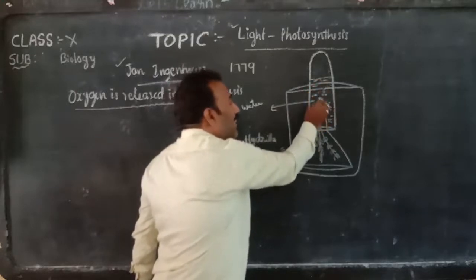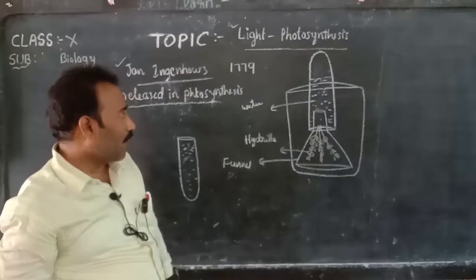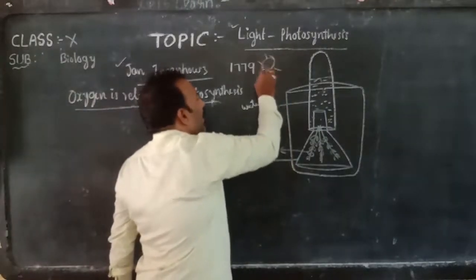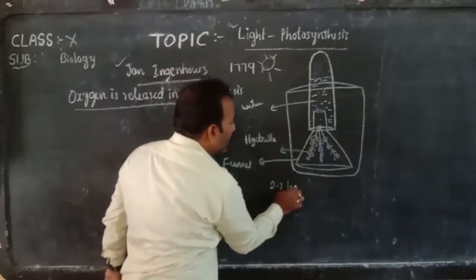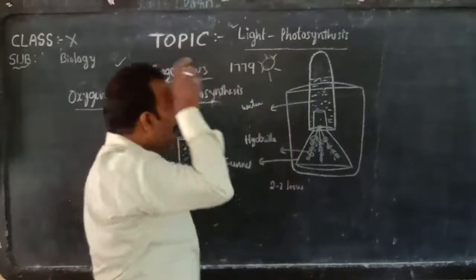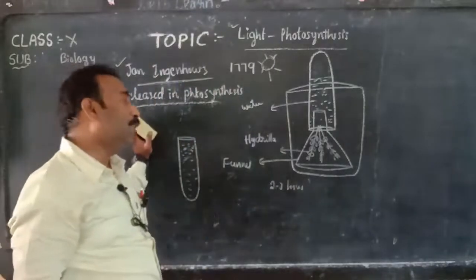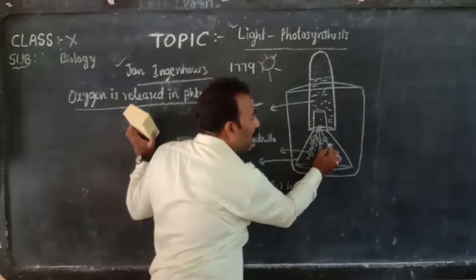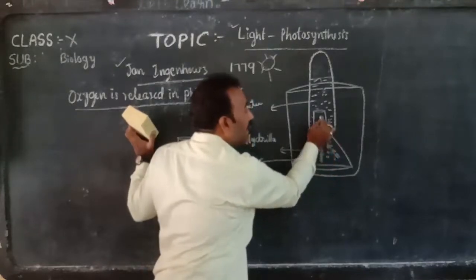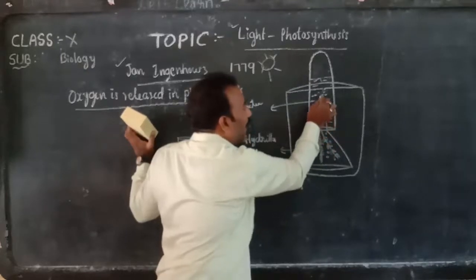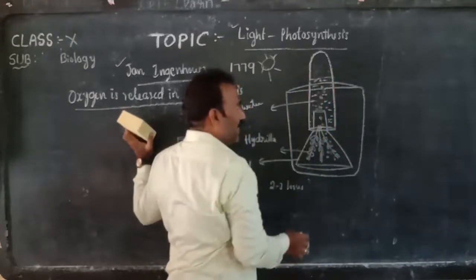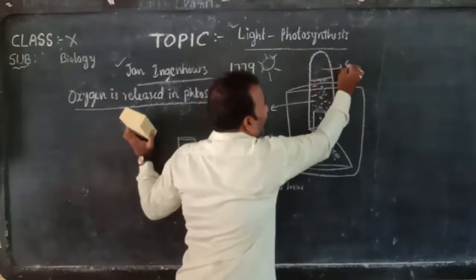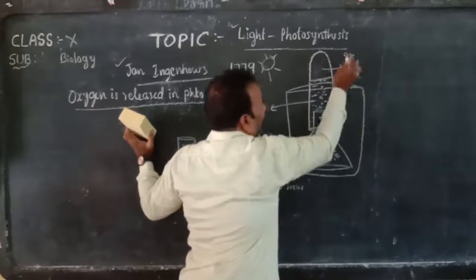The entire apparatus was kept in sunlight for two to three hours. After some time, small gas bubbles came out from the leaves of the hydrilla pieces and were collected at the top of the test tube. When sufficient gas was collected — this gas contains oxygen.